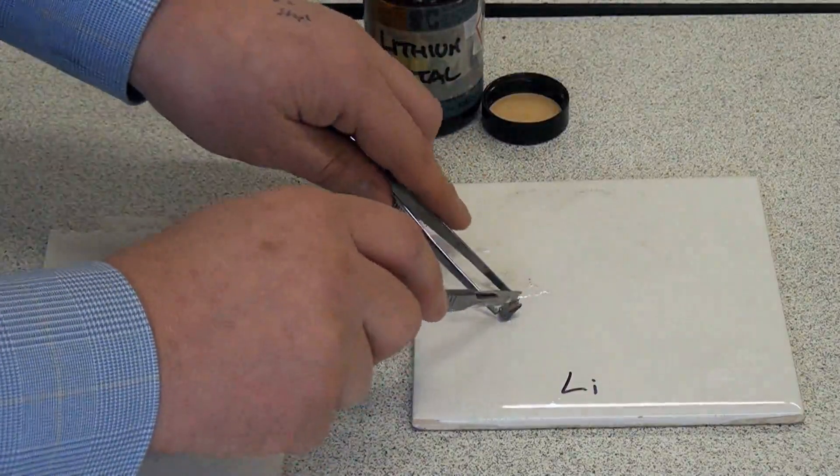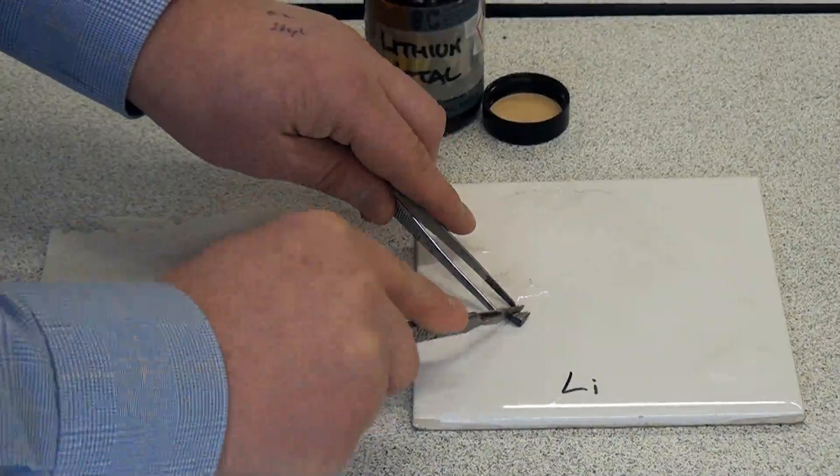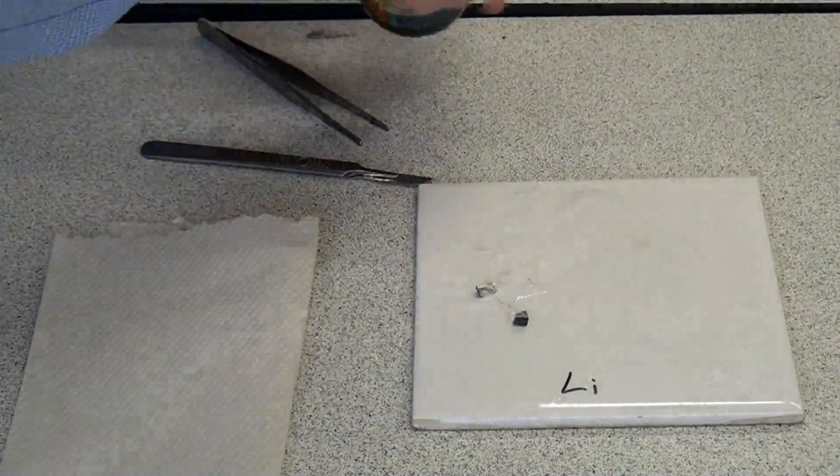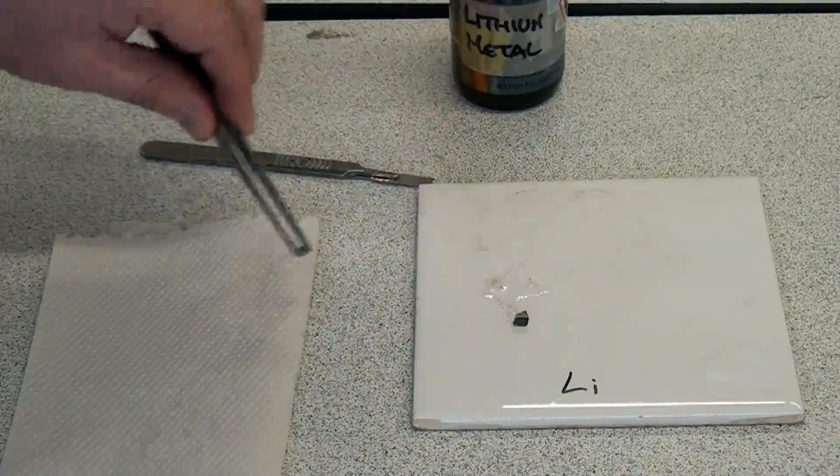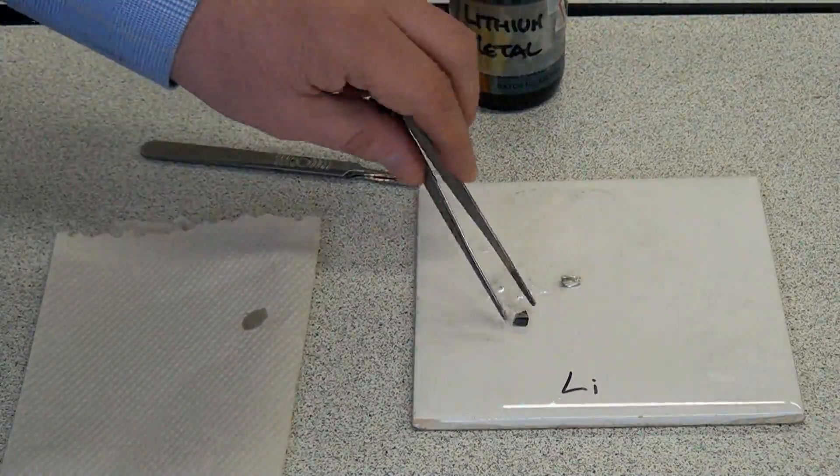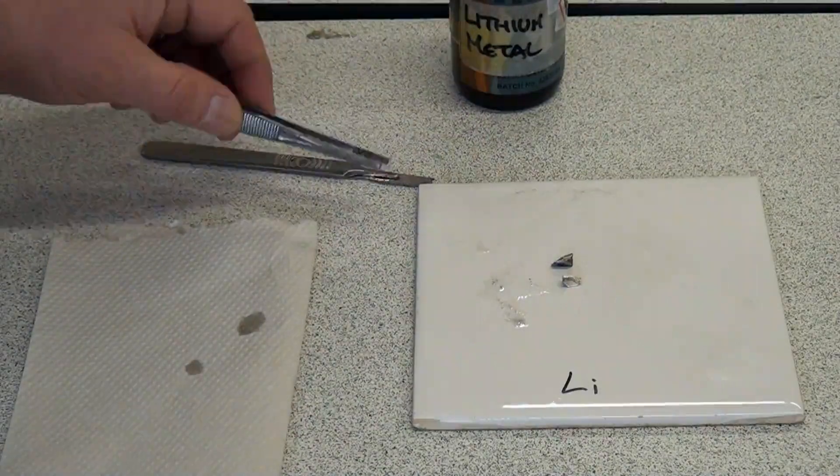I'm just going to cut a slightly smaller piece of lithium, chop that in half. Next thing I'm going to do is dab that on the paper towel to remove any excess oil that's on the outside, and then that is ready to go in the water to see how it reacts with water.